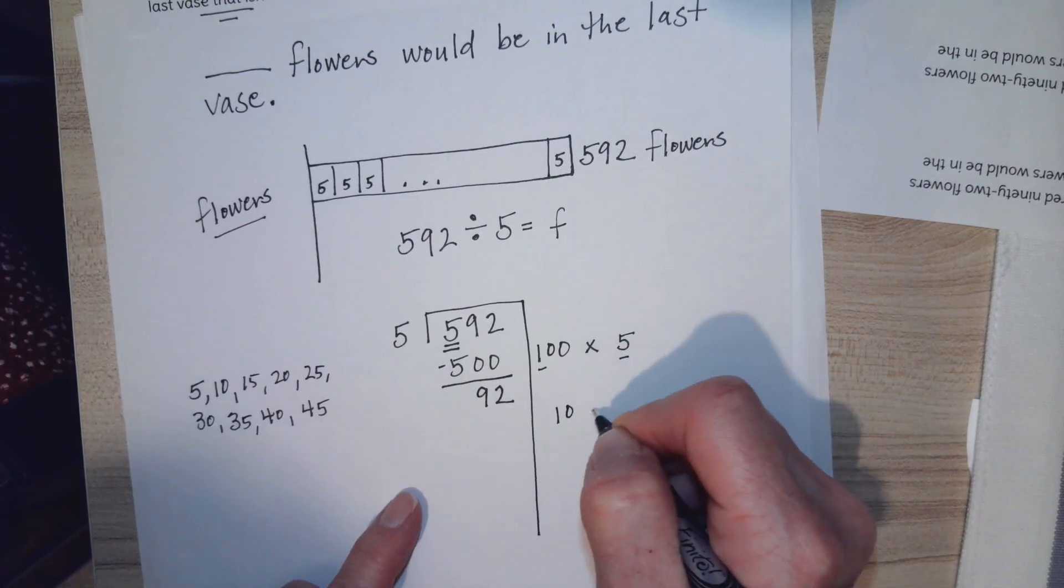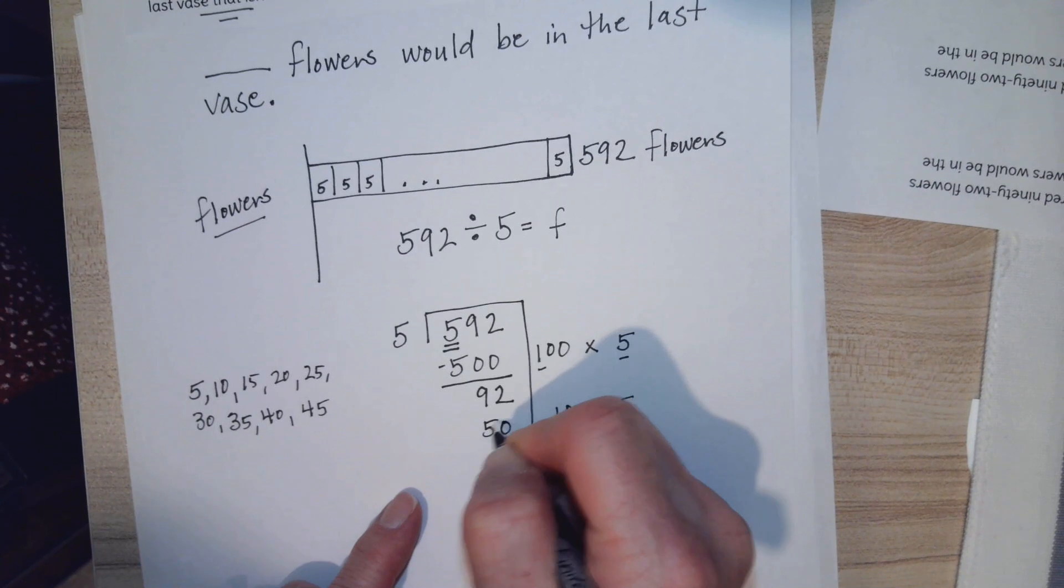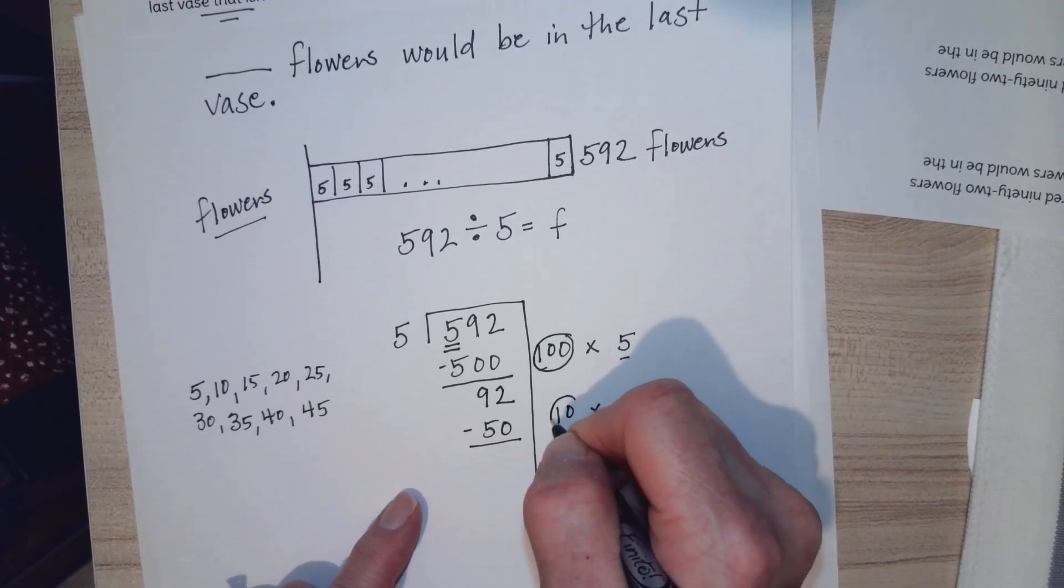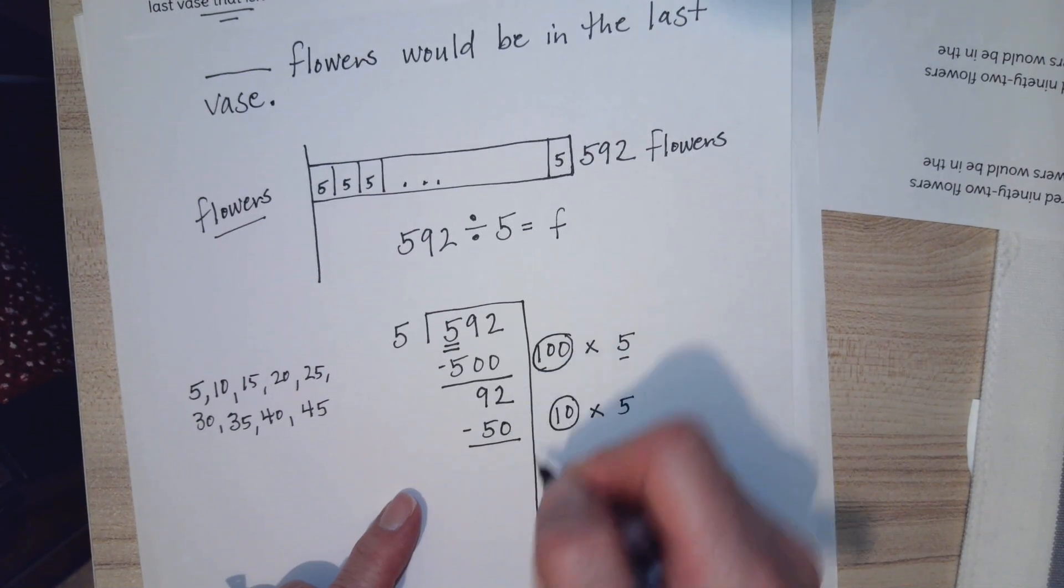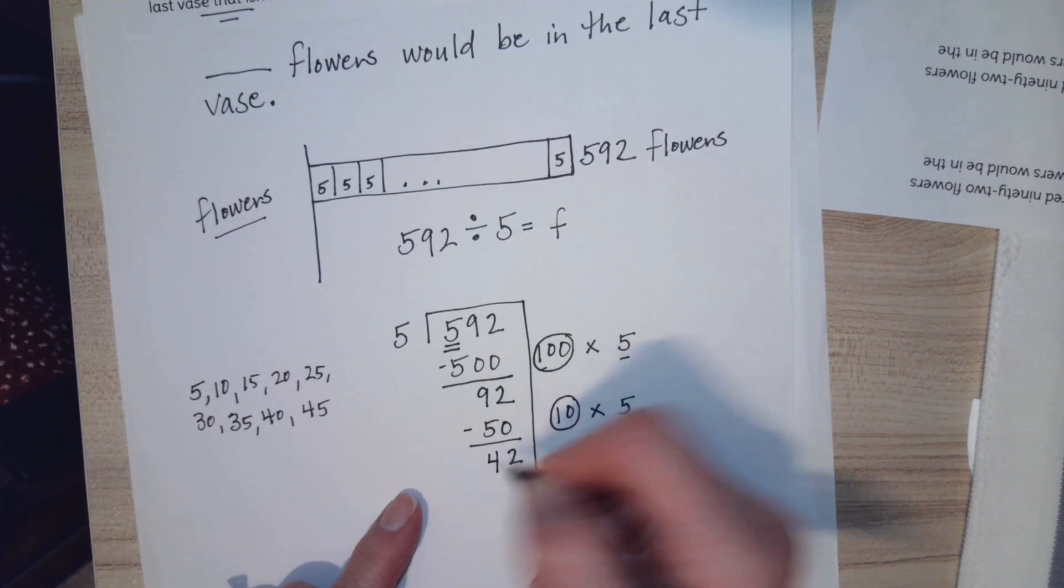I do know that 5 times 10 is 50, so why don't we just do this. 10 times 5 is 50. So this is going to be part of my answer, part of my quotient. 2 minus 0 is 2, 9 minus 5 is 4.